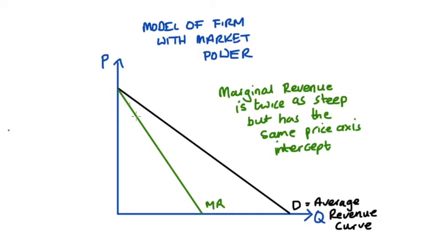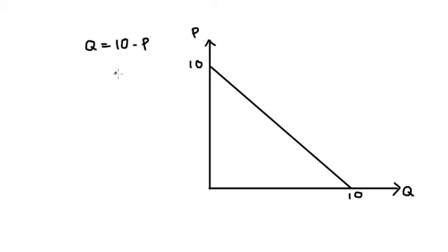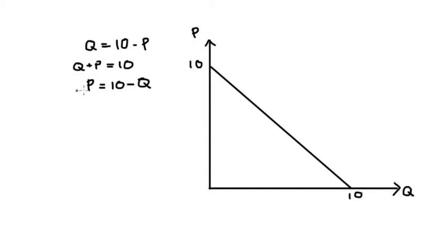We can demonstrate this by considering a very simple case. Imagine that our demand curve is expressed by the equation Q is equal to 10 minus P. The first thing I'm going to do is express this equation with the price variable isolated on the left hand side — that means the equation will be in slope-intercept form. To do that, I add P to both sides and take away Q from both sides. We're left with what we call an inverse demand curve: P is equal to 10 minus Q. The constant here is the price axis intercept, equal to 10, and the slope is the coefficient on Q, which is negative 1.